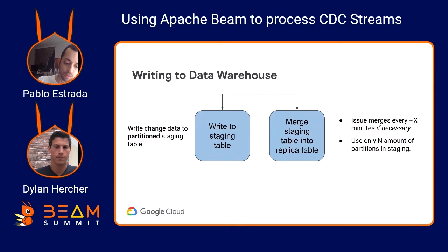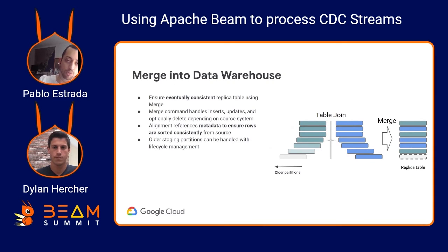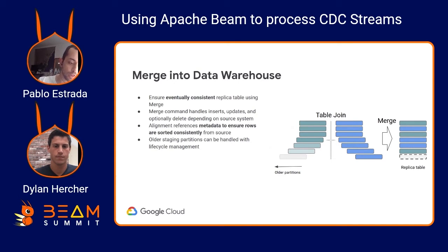On the right-hand side, we issue merges onto a replica table. A merge is a common operation in data warehouses where you define a statement that does a table join. We join the historical change log staging table against the replica table, and depending on the results of that join, we apply large-scale mutations onto the replica table. We join on the primary keys and ask: what was the latest change applied to this primary key? Then we apply that change onto the replica table. This is why we need rows to be sortable — we need to find the latest change to every primary key in a table.